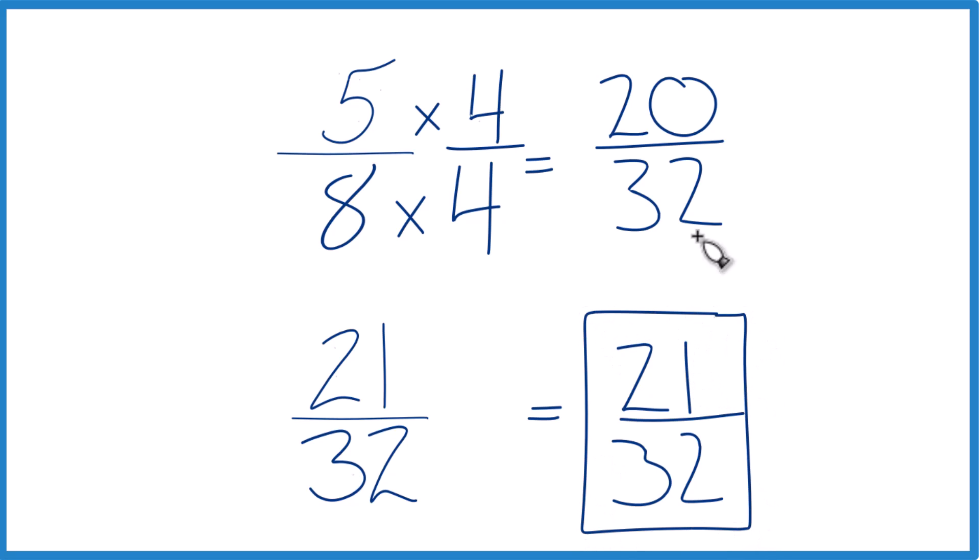Not by a lot, only 1/32, but it's still greater. Since these are equivalent, that means that 21/32 is also greater than 5/8, since these are the same value.